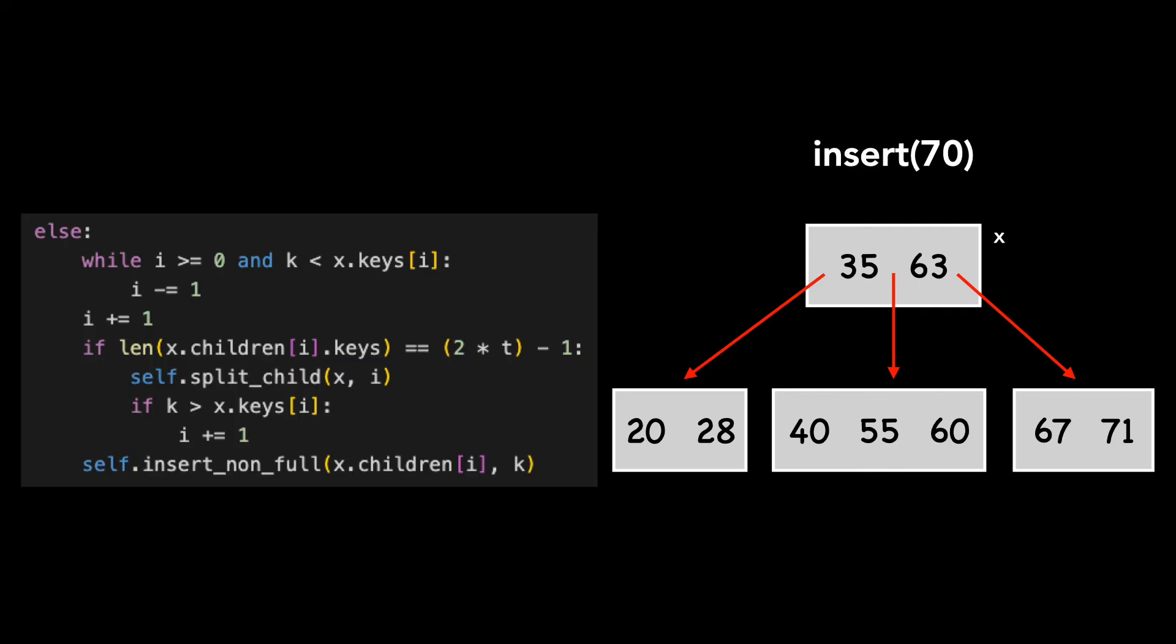Let's say we want to insert 70. We first need to determine the subtree in which 70 belongs. We do this by scanning the keys in the node. In this case, the rightmost child is the subtree in which 70 belongs.